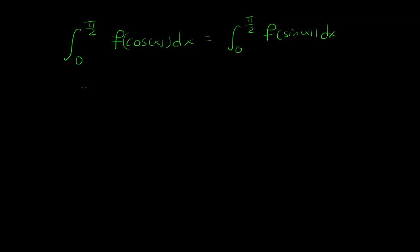So let's start off on the left side, and let's use the fact that cosine is equal to sine of π/2 minus x. And let's make the substitution. So you have the integral from 0 to π/2, f of sine of π/2 minus x.